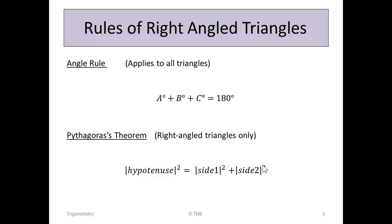When solving problems of right-angled triangles, the following two rules are usually used. The first one, the angle rule, which applies to all triangles, states that A plus B plus C — the sum of the three angles in the triangle — must equal 180.